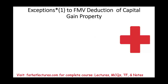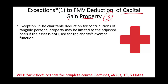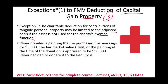Now let's look at Exception 1 for the fair market value deduction of capital gain property. Remember, capital gain property is the third category, and generally you can deduct fair market value. Exception 1: the charitable deduction for tangible property may be limited to the adjusted basis if the property is not used for the charity's exempt function. For example, suppose Oliver donated a painting he purchased five years ago for $5,000, with a fair market value of $50,000, to the Red Cross. The Red Cross has no use for a painting — they are going to sell it — so the donation is not for the intended use of the charity.